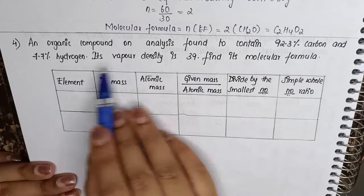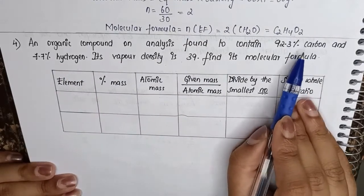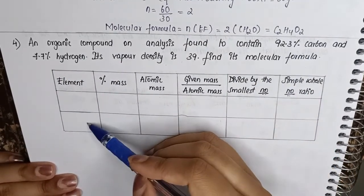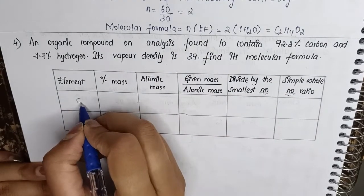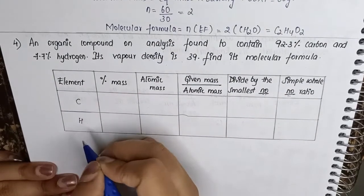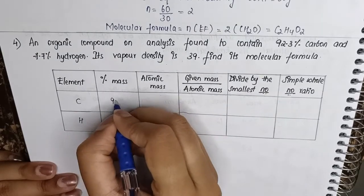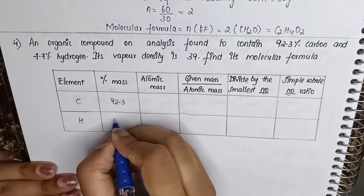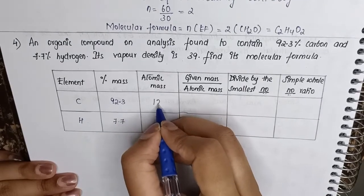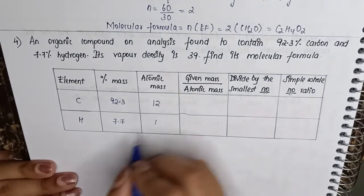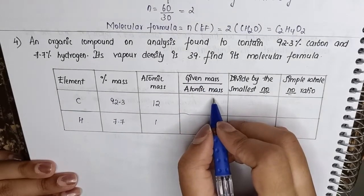So here in this case, the percentage is given directly to us, so we can directly put it in the question and find out the value. Two elements: carbon, hydrogen. Carbon is 92.3 and hydrogen is 7.7. Atomic mass of carbon is 12, hydrogen is 1.